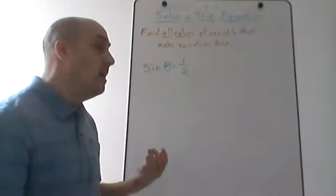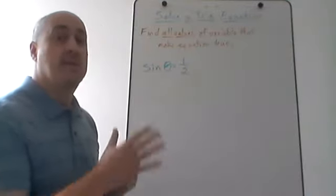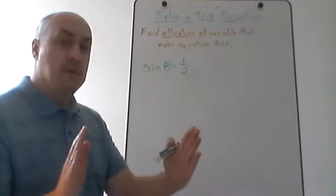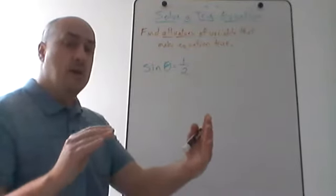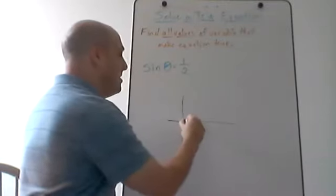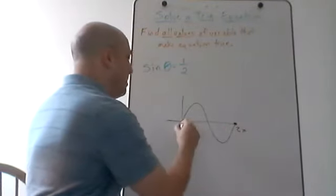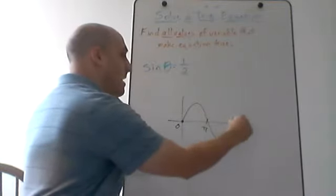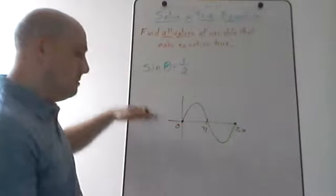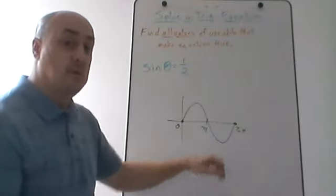What we do when we solve a trig equation is first look for all the solutions in one period — like from zero to two pi — because the period of the sine function is two pi. If you don't know what I'm talking about, go back and watch some of the videos I did about the definitions of the trig functions and the graphs of the sine and cosine functions. If I graph the sine function, it starts at the origin, goes up, comes back down, and at two pi that completes one full period; then it starts the whole thing over again in both directions forever.